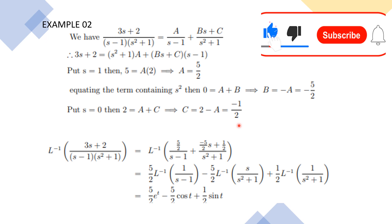With A = 5/2, B = −5/2, C = −1/2, substituting back: (5/2)·L⁻¹{1/(s−1)} − (5/2)·L⁻¹{s/(s²+1)} + (1/2)·L⁻¹{1/(s²+1)}. Since L⁻¹{1/(s−1)} = eᵗ, L⁻¹{s/(s²+1)} = cos t, and L⁻¹{1/(s²+1)} = sin t, the final answer is (5/2)eᵗ − (5/2)cos t + (1/2)sin t.